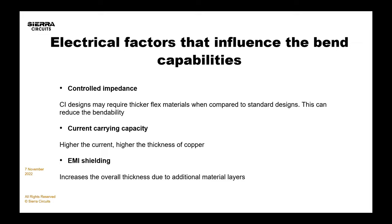We also want to bring in electrical factors that can impact the bend capabilities of your board. Controlled impedance designs may require thicker flex materials, and thicker materials can reduce your bend radius. So you should probably have your understanding of the mechanicals first, but at the same time, in parallel, consider your electrical requirements — is there controlled impedance on this design? What thicknesses and trace widths are you aiming for to meet your impedance requirements? Once mechanicals are set in place, it becomes very hard to make changes, so try to do those in parallel.